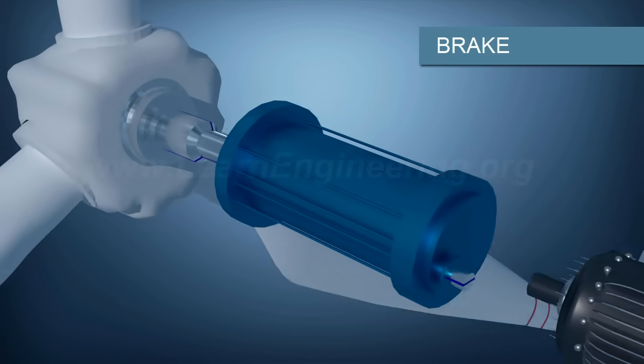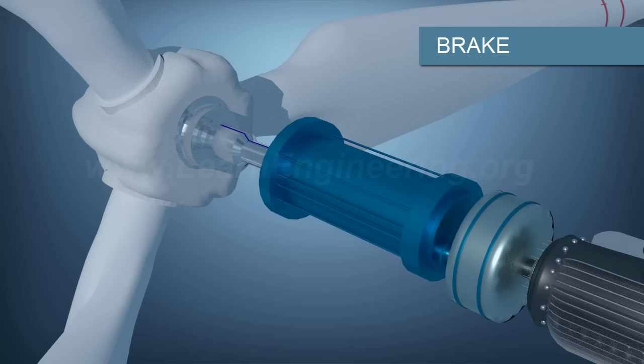A brake also sits in the nacelle. The function of the brake is to arrest wind blade rotation during excessively windy conditions.